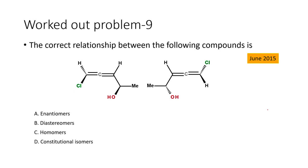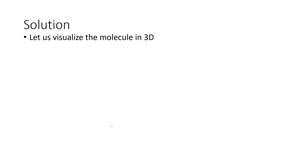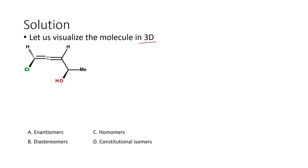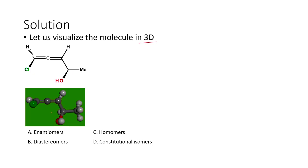Let us look at the next two problems. In this one, we are going to look at the correct relationship between these two compounds — this is basically an allene-type molecule. We need to determine whether these two compounds are enantiomers, diastereomers, homomers, or constitutional isomers. We will visualize the molecule in a three-dimensional view and then transform this compound into a 3D representation.